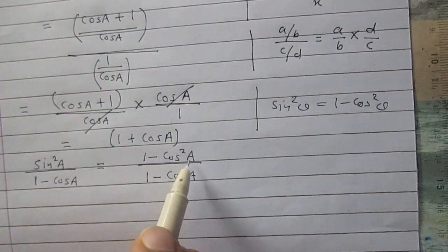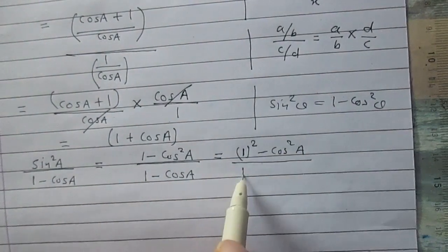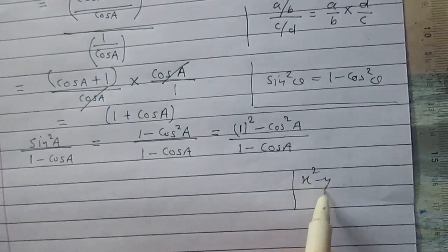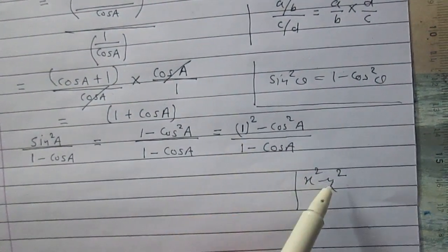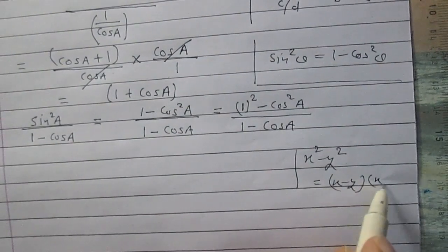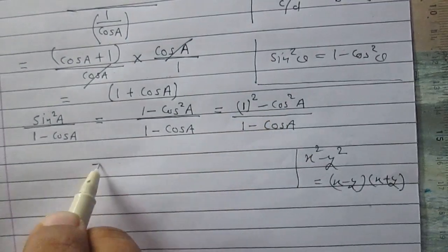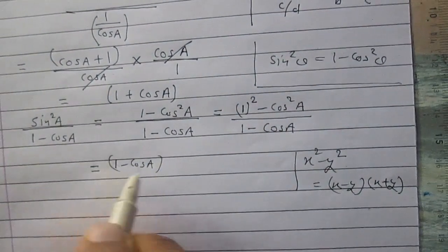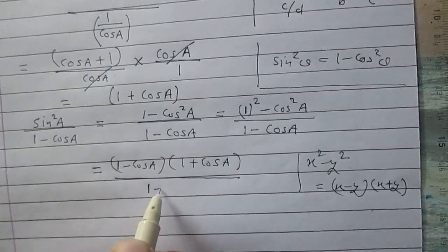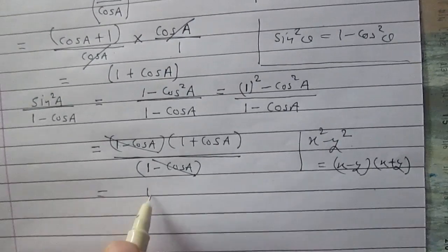The numerator is 1 minus cos squared a. This is of the form x squared minus y squared, where x stands for 1 and y stands for cos a. Using the identity x squared minus y squared equals (x minus y)(x plus y), the numerator becomes (1 minus cos a)(1 plus cos a). In the denominator we have (1 minus cos a), so (1 minus cos a) cancels, giving us 1 plus cos a.